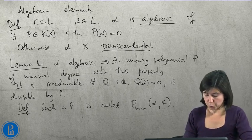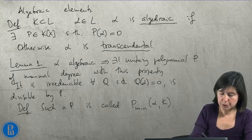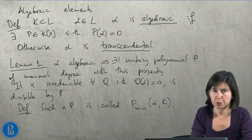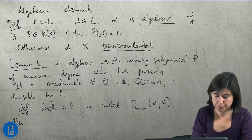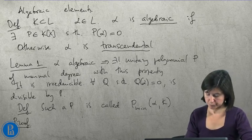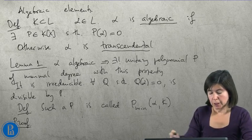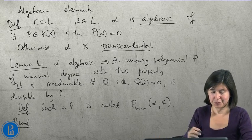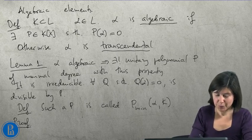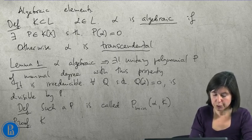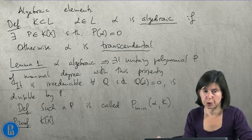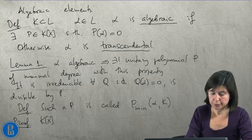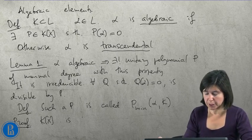Also, the proof of the lemma is very simple, of course. It is a direct consequence of definitions. Well, let me see it in sophisticated terms. We know that K[x], the polynomial ring in one variable, is a principal ideal domain.